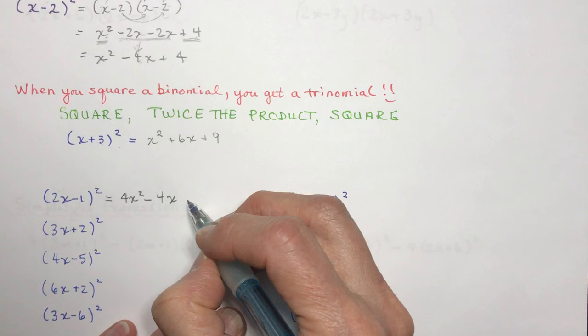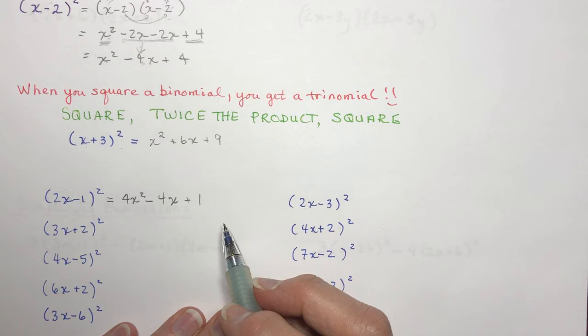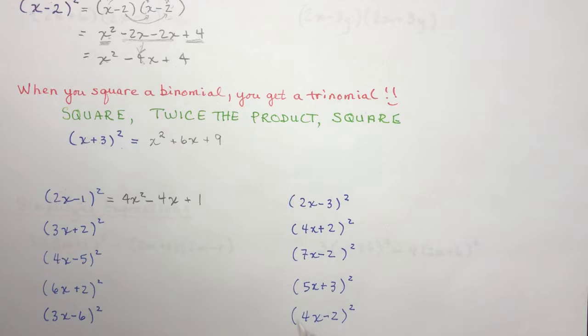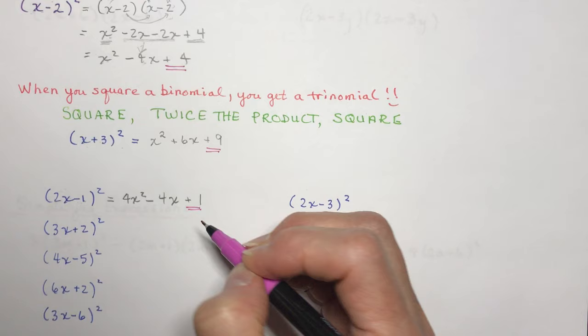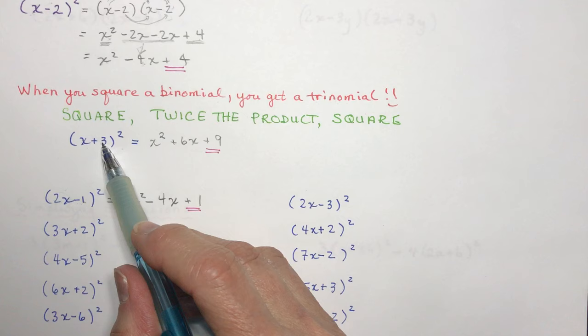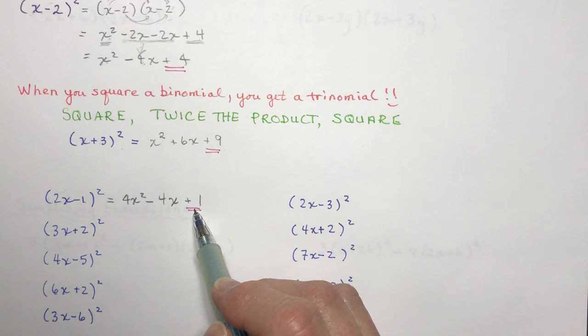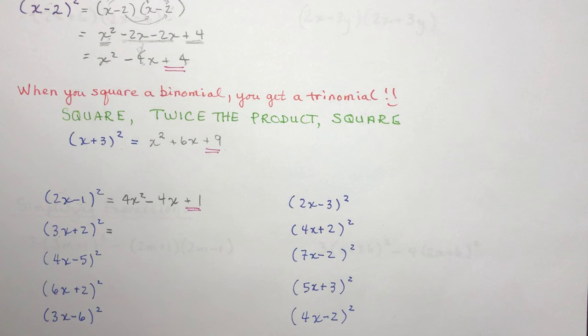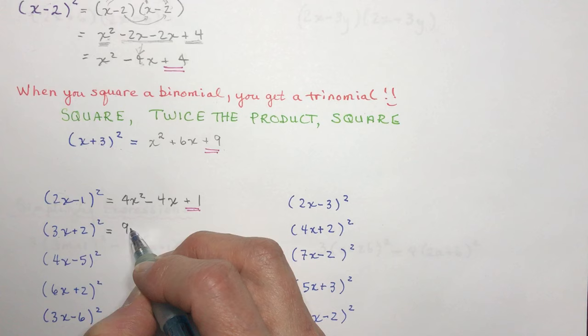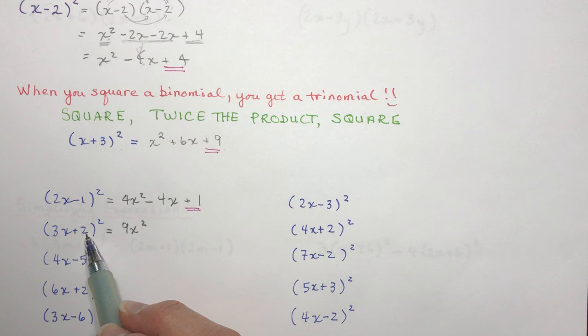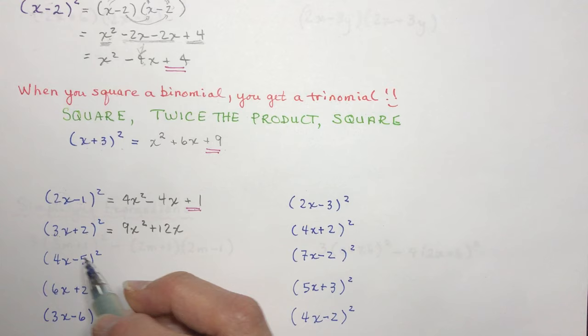Something to note as we square binomials: the last term is always positive, because squaring a negative gives a positive and squaring a positive gives a positive. So this last term always has to be positive when squaring a binomial. For (3x + 2) squared: 3x squared is 9x squared; product of 3x and 2 is 6x, twice that is 12x; and 2 squared is 4.